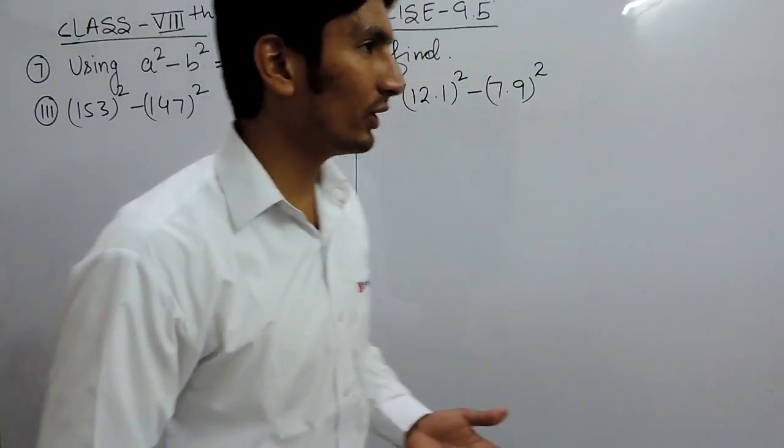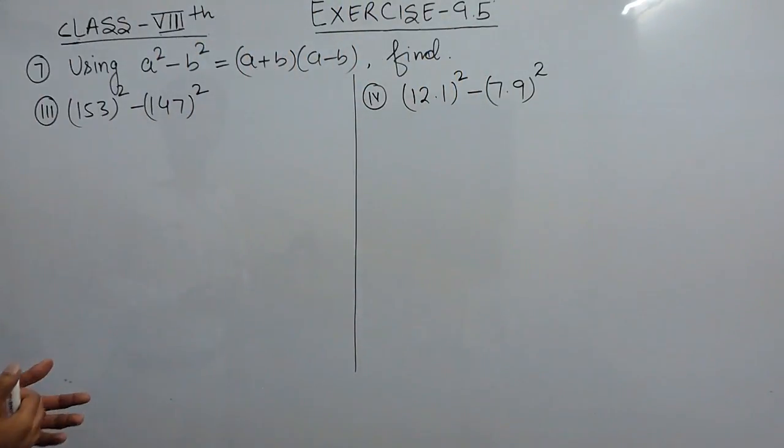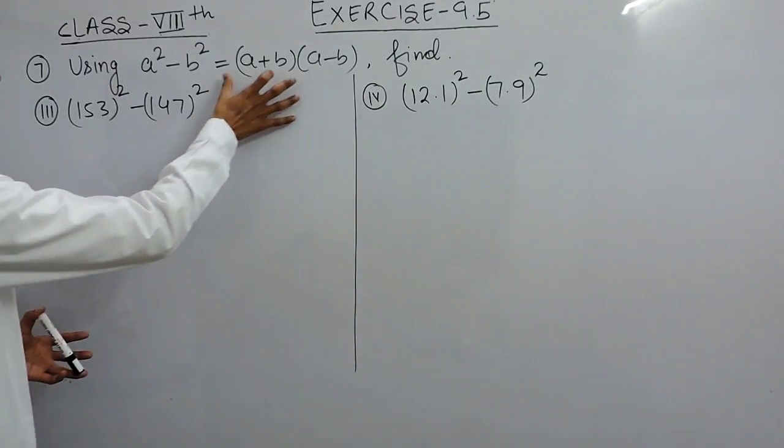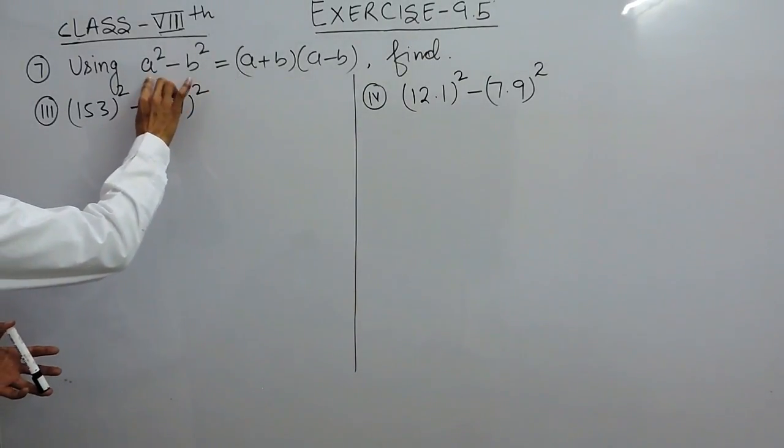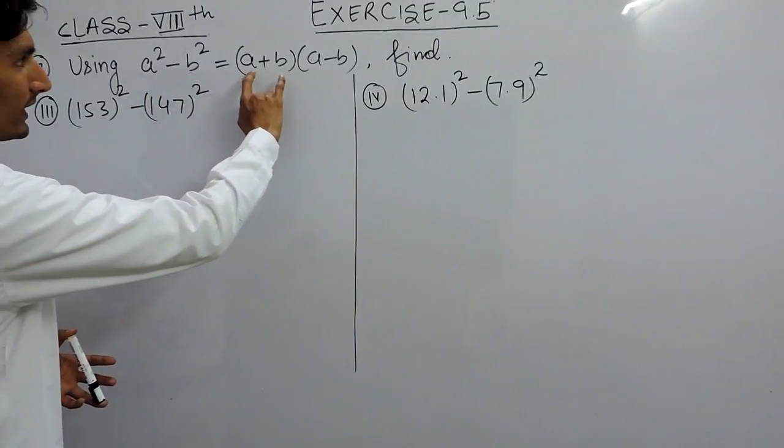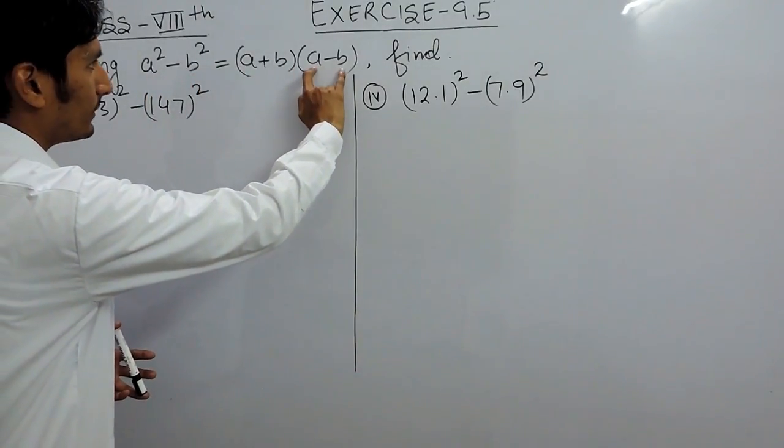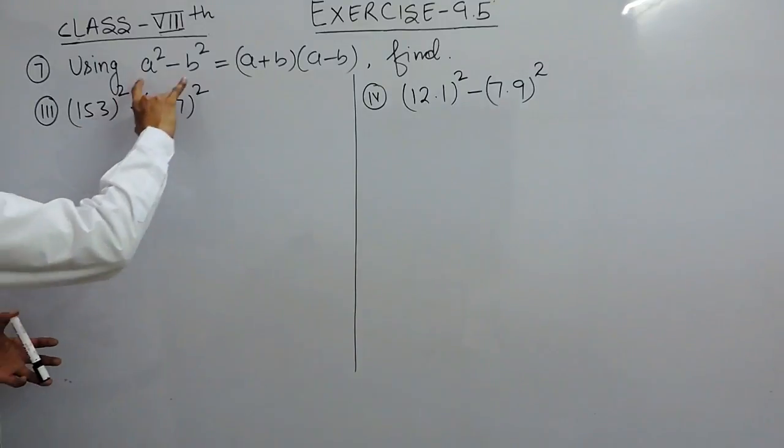Hello everyone, in this video we are going to solve the last two parts of question number 7. Again, you have to solve this using the identity a² - b² = (a+b)(a-b), and these numbers are in this form.